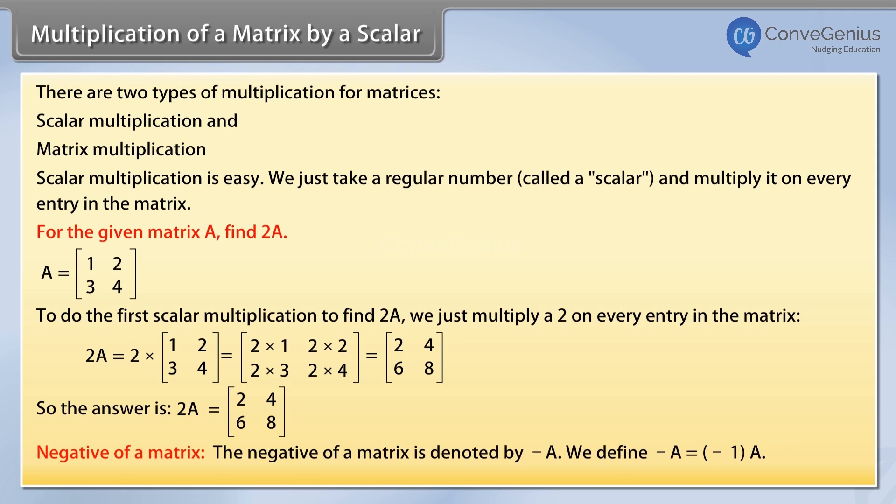Negative of a matrix. The negative of a matrix is denoted by −A. We define −A equals −1 times A.